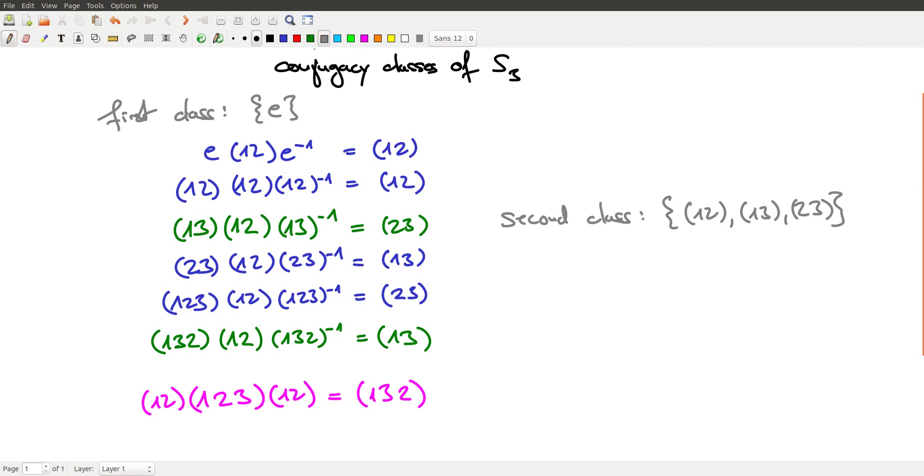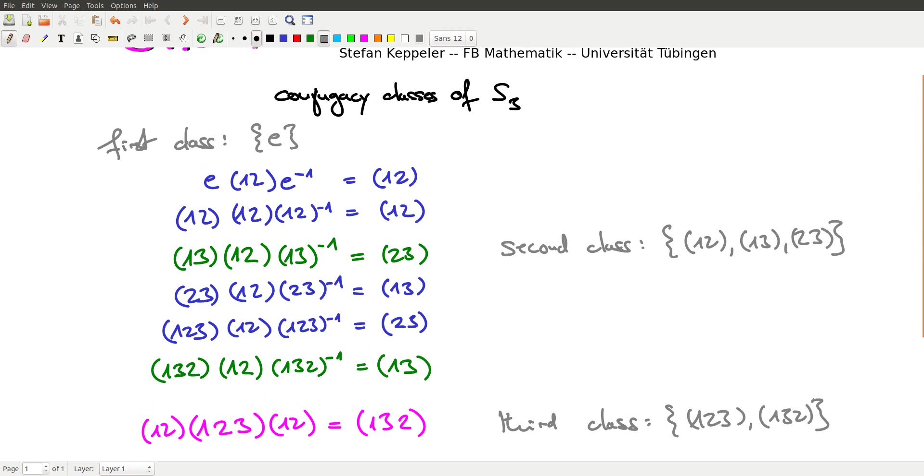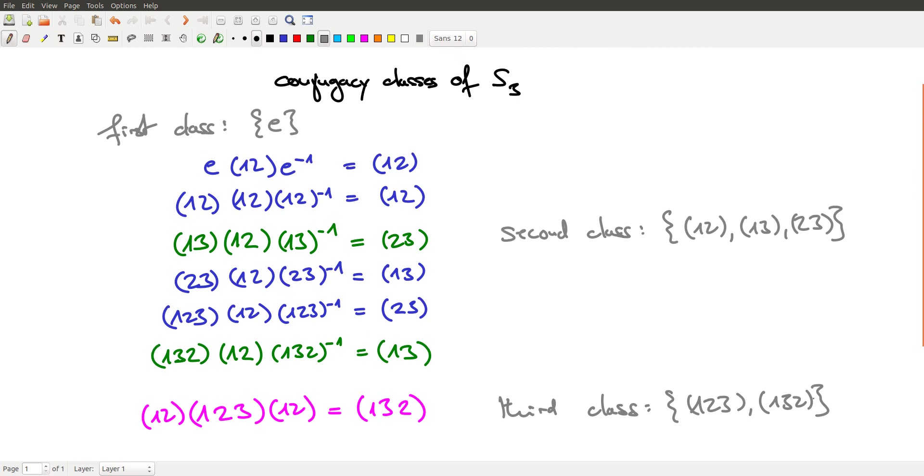So we find that (1,2,3) and (1,3,2) are in the same conjugacy class and actually they form the third class, two cyclic permutations. And soon we will see that this generalizes. If we look at the conjugacy classes of Sn, they consist of all the permutations with the same cycle structure.